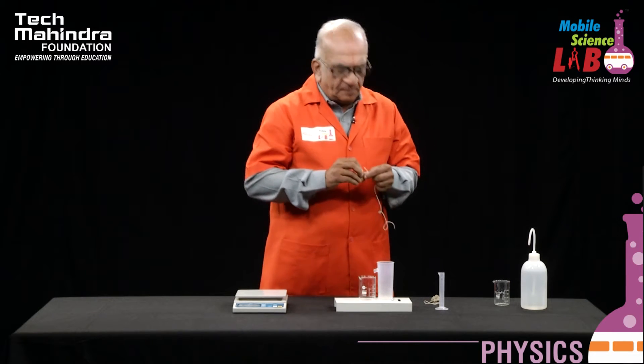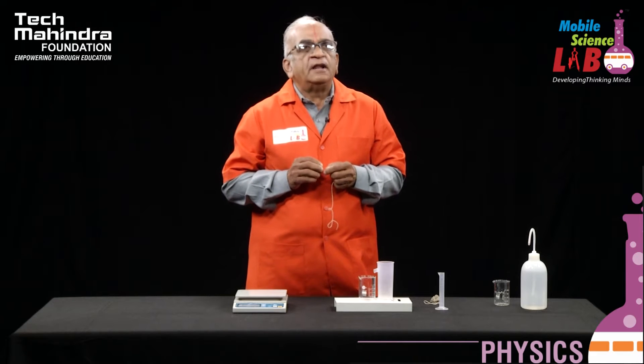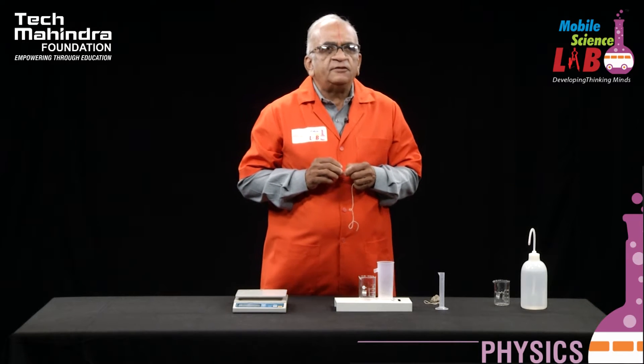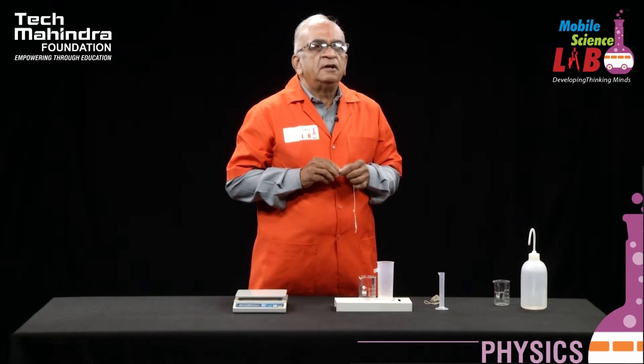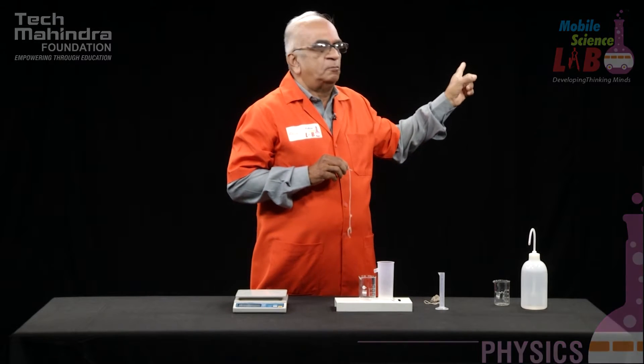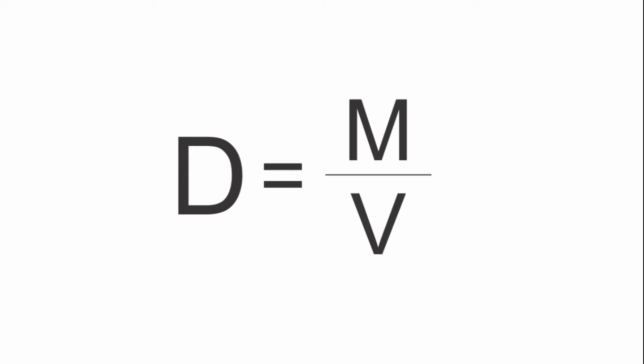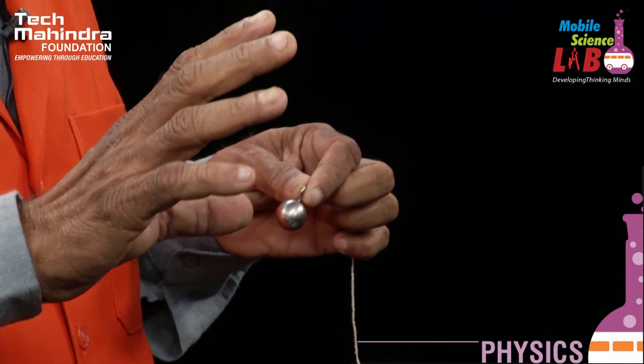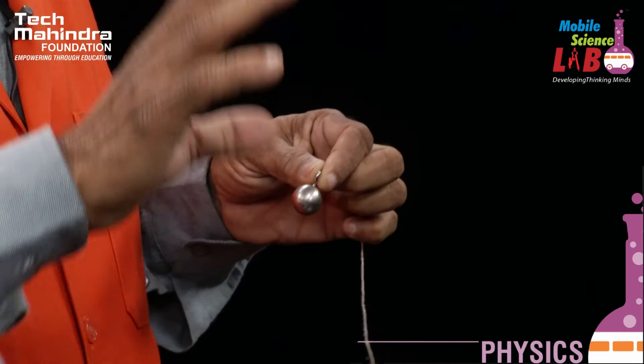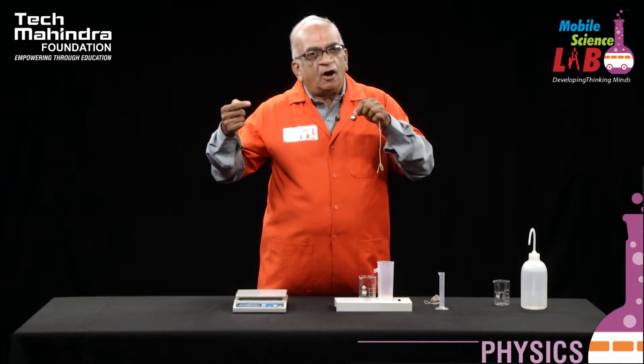Before starting the experiment, one should know what density is. Density is defined as mass per unit volume. Everybody has some mass, whether it's a regular shape body or an irregular shape body — it has its own mass. Similarly, everybody has got its own volume, unless it is a two-dimensional picture or a single-dimensional object.